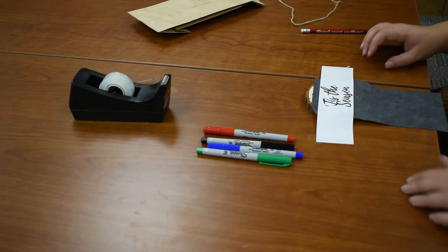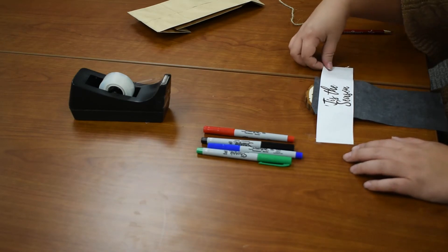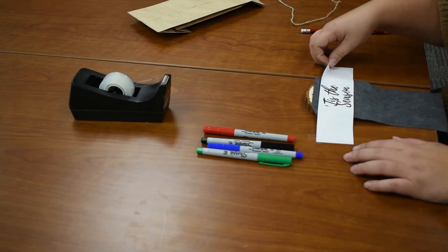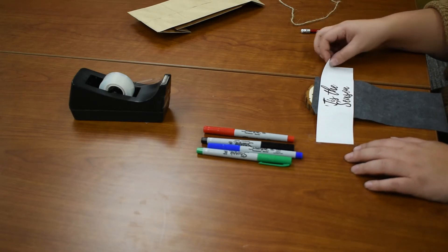Once you're done tracing the stencil, make sure you have all of it done before you take this off because it'll be very hard trying to line it back up.